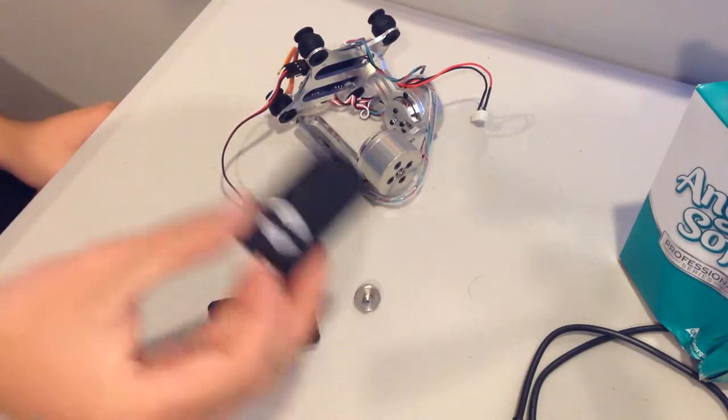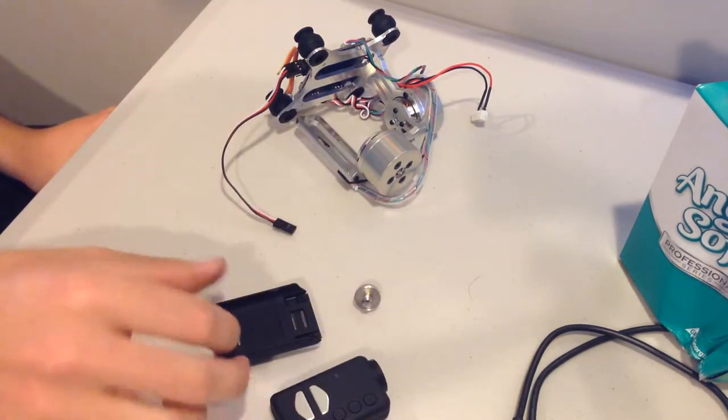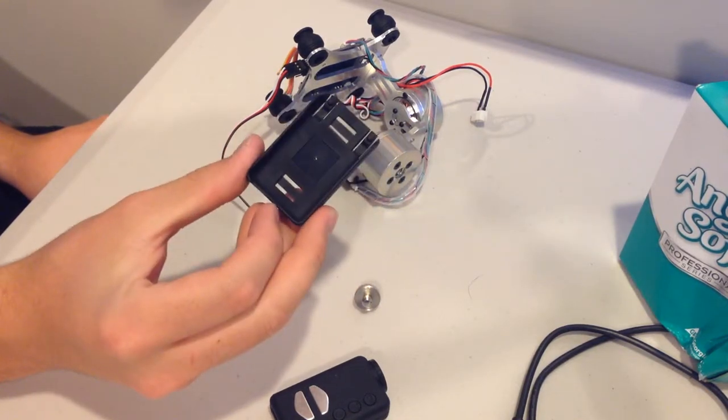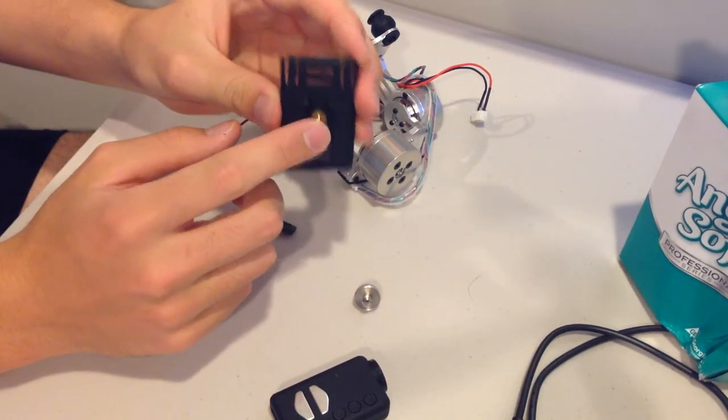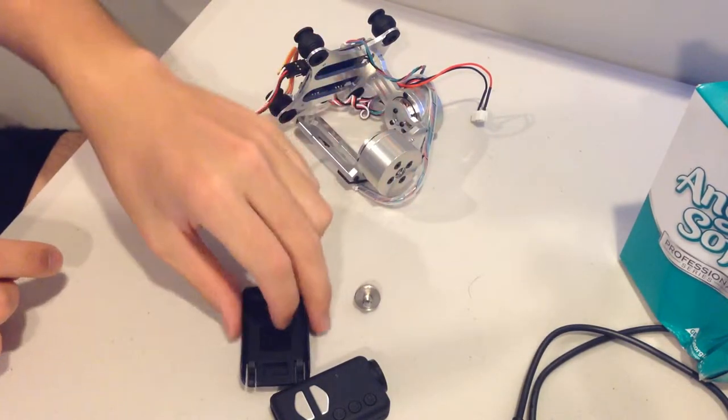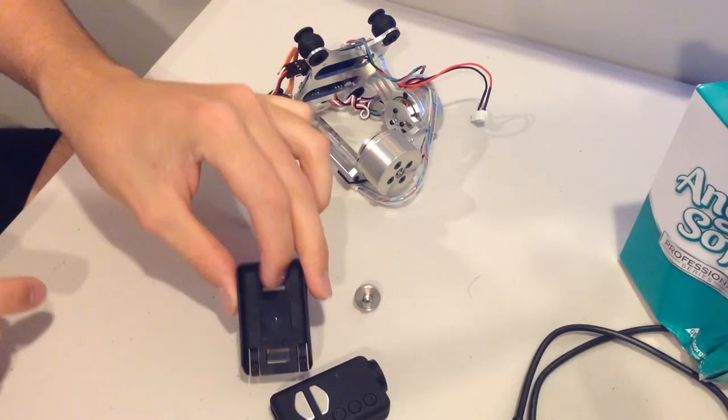What you'll need for this is your Mobius camera, your Mobius mount that comes with the Mobius camera, and also the tripod mount which is on the bottom and that also comes in the kit. You just need to install this little square thing on the bottom.